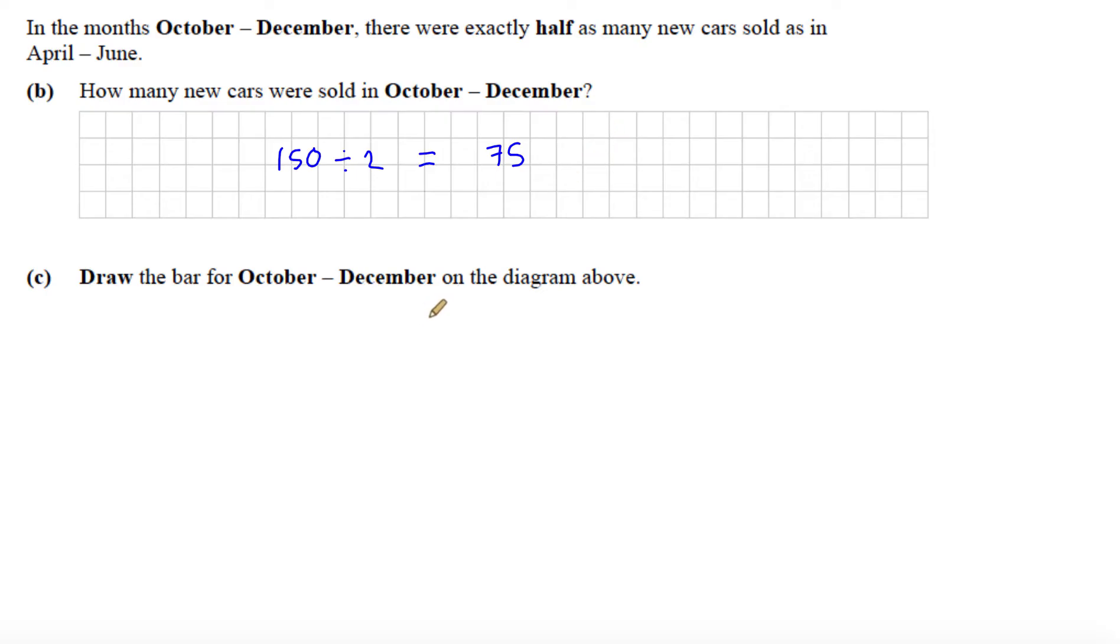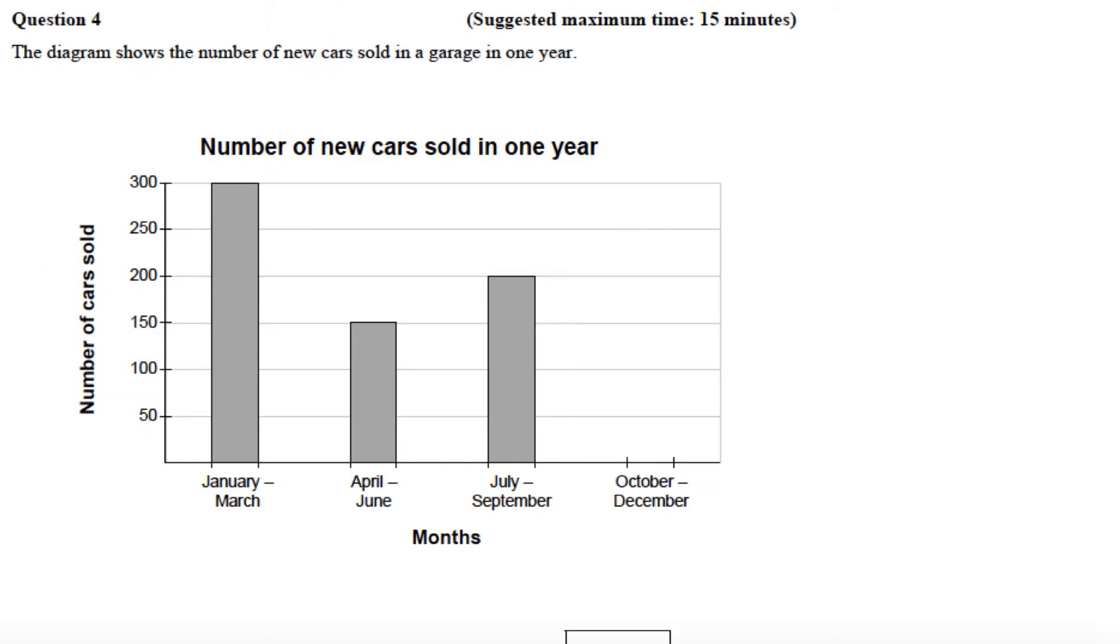Part C says draw the bar for October to December on the diagram above. So we're going to draw a bar up to 75. So 75, if we look at our axis here, 50 to 100, 75 is exactly halfway between there, so it'd be somewhere like that. So we just draw our bar to 75.